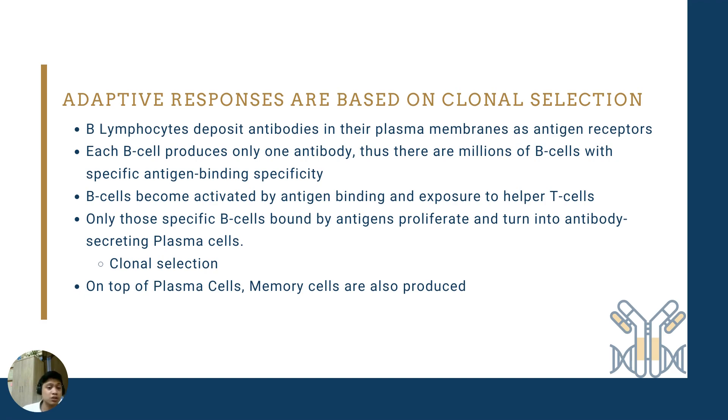Only those specific B-cells bound by antigens proliferate and turn into antibody-secreting plasma cells. After being bound and after being helped by T-lymphocytes, these specific B-cells now differentiate further into plasma cells which produce antibodies. And this process of selective proliferation is what we call clonal selection. Only those B-cells that are bound by specific antigens are the B-cells which proliferate and differentiate.